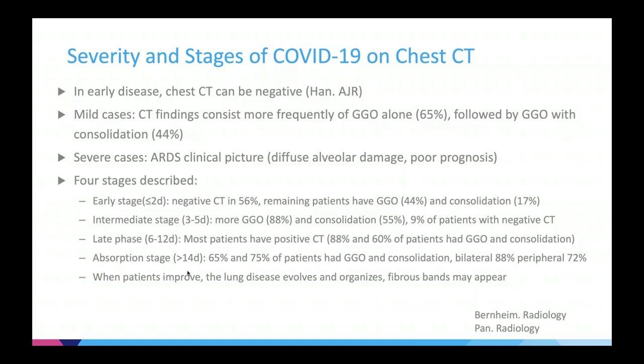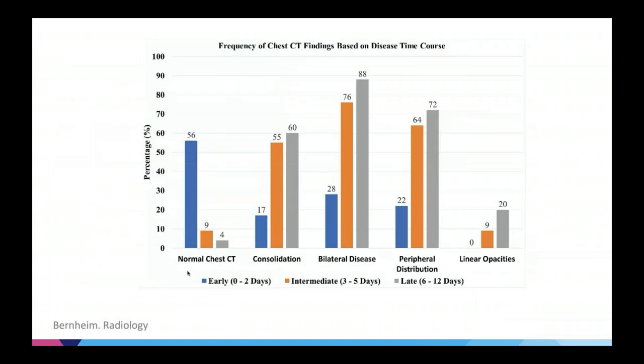This is based on a paper by my colleague Adam Bernheim at Mount Sinai, published in Radiology, describing chest CT findings based on the time course. Early on, chest CT can be normal and negative, with some degree of consolidation, bilateral disease, and peripheral distribution. In intermediate stages, you get more consolidation, more bilateral and peripheral involvement. In the late stage, most patients will have findings including linear opacities, which are more frequent — about 20% of patients will have some linear opacities.